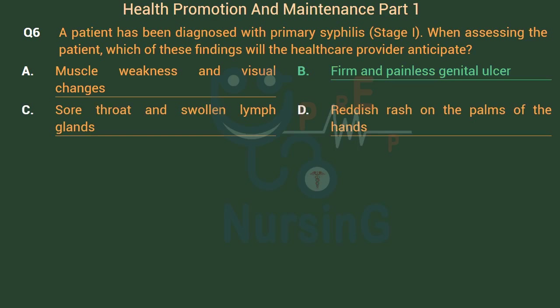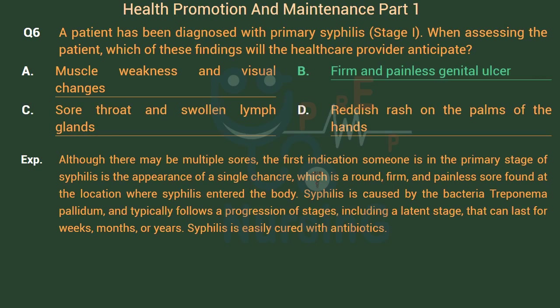The right answer is Option B: Firm and painless genital ulcer. Although there may be multiple sores, the first indication someone is in the primary stage of syphilis is the appearance of a single chancre, which is a round, firm, and painless sore found at the location where syphilis entered the body. Syphilis is caused by the bacteria Treponema pallidum and typically follows a progression of stages, including a latent stage that can last for weeks, months, or years. Syphilis is easily cured with antibiotics.